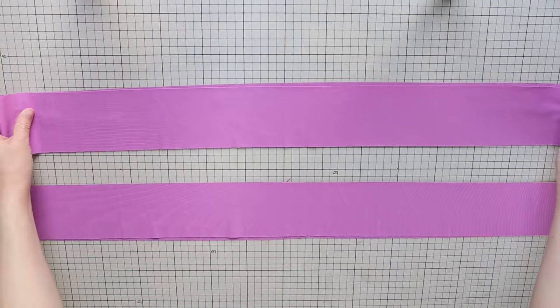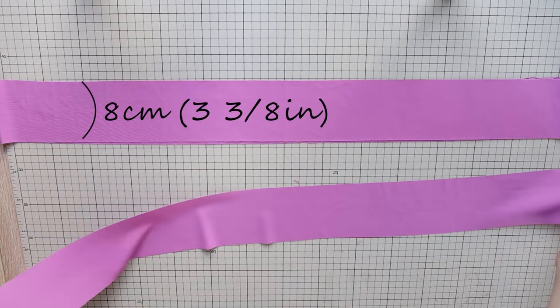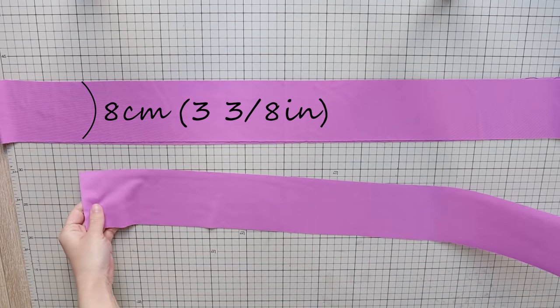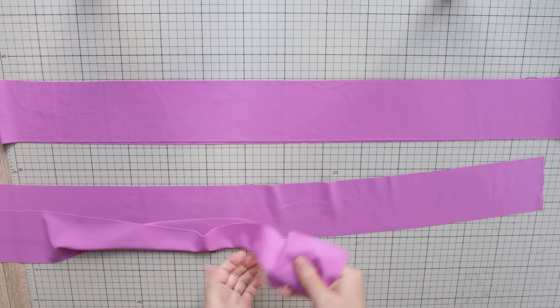Also from the leftover fabric, cut out two long strips like this. They're 8 centimeters or 3 and 3 eighths inches wide and use the whole width of the fabric. All right, it's time to sew.